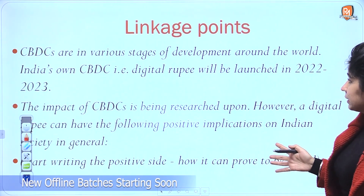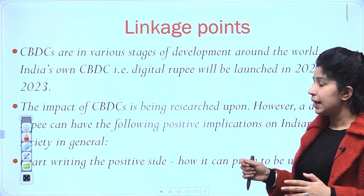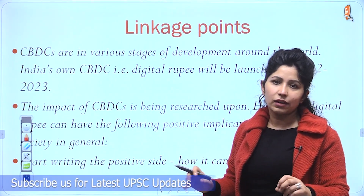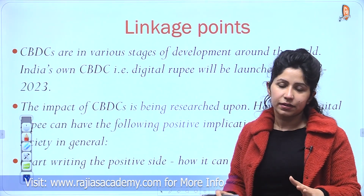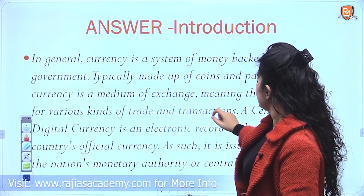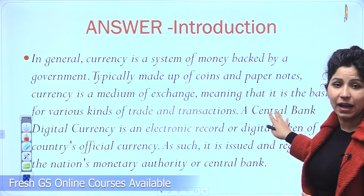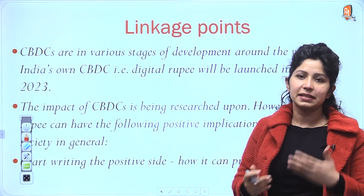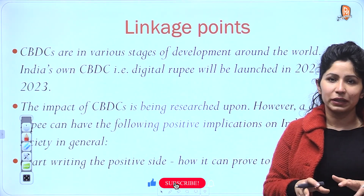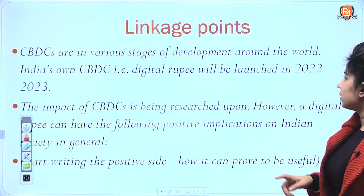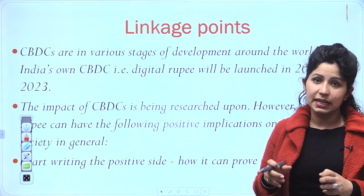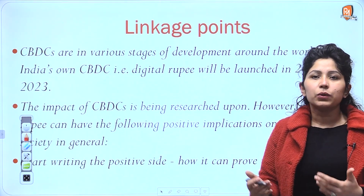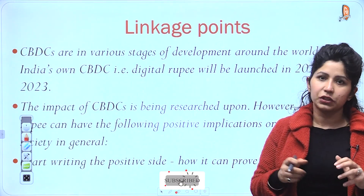Once you have that information, show the examiner that you know about digital currencies and what is happening around them. Mention that CBDCs are in various stages of development around the world, then talk about India's own central bank digital currency. Note that once you have written the extended definition of something, you do not need to write it again — use the full form once and then just use the short form CBDC throughout the answer. This saves word count and makes it easier for the examiner to read.